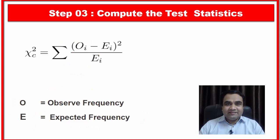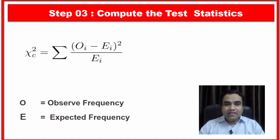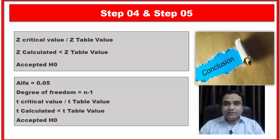The third test is the chi-square test. In the chi-square test you need your observed values. It is a non-parametric test, and from the observed values you can calculate the expected values.